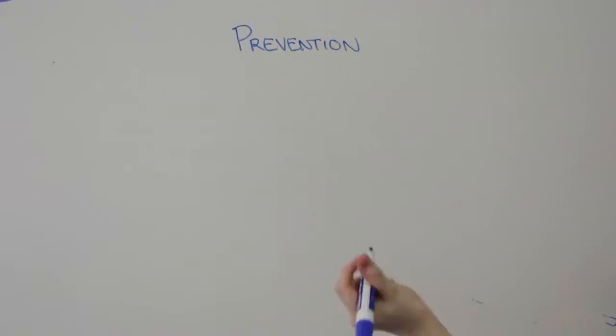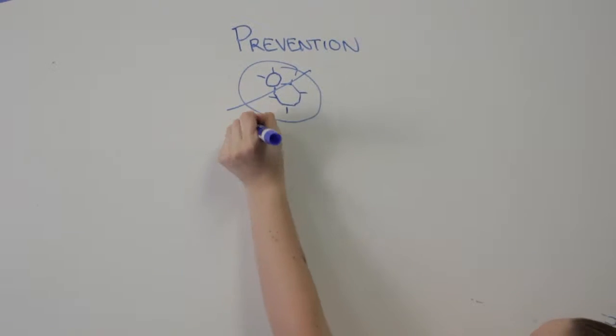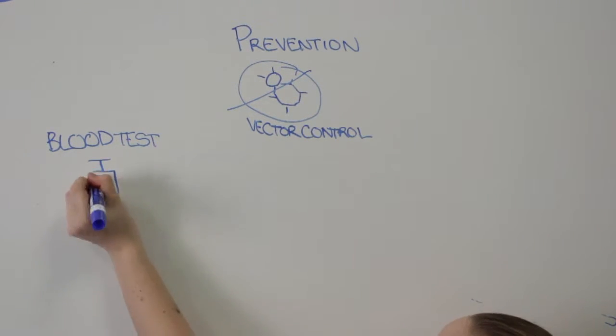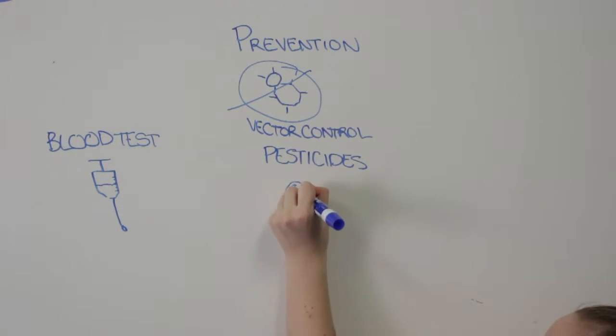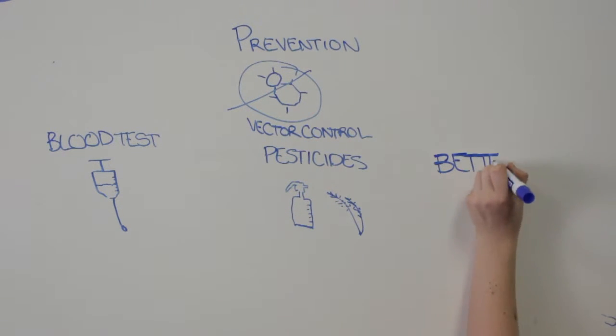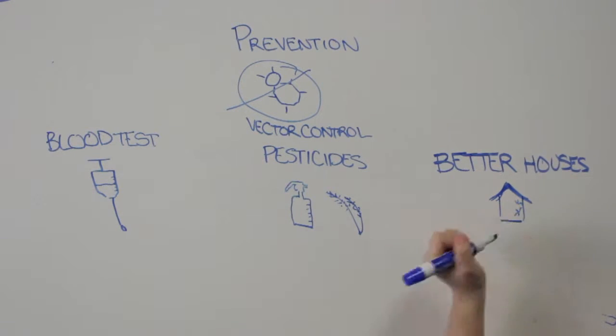To prevent the spread of Chagas disease, the simplest solution is vector control. This can be done through blood tests, which allow accurate diagnosis even if the patient is asymptomatic, pesticides to kill the triatomine bug once they are in the habitat, and better home construction, which excludes cracks the triatomine bug lives in.